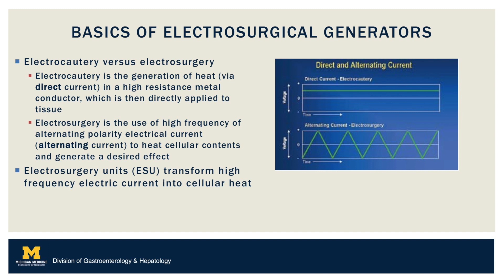There are three basic effects of electrosurgery: desiccation, vaporization, and fulguration. While desiccation uses direct contact to break down tissue and subsequently produce char, vaporization and fulguration rely on distance between the probe and the tissue to modify tissue.